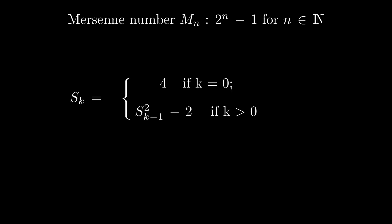The test only works for Mersenne primes and has a very simple setup. Define a sequence s_k. It equals 4 for k equals 0, and each next term is the previous term squared minus 2.